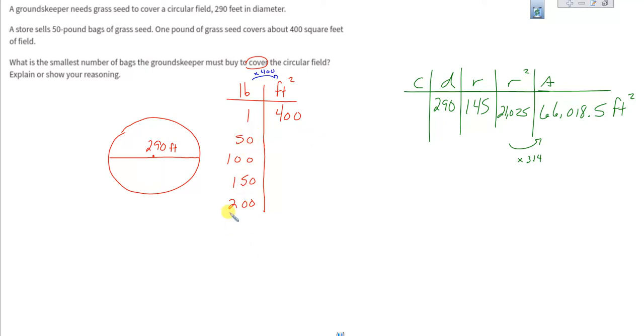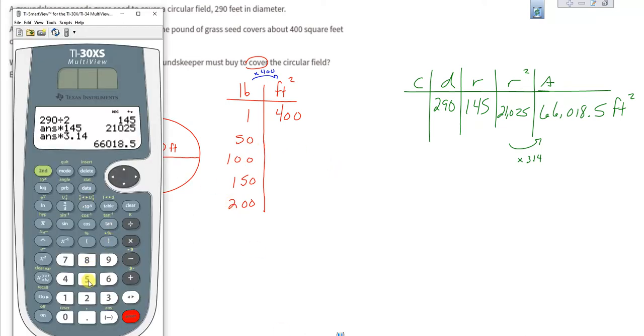We need to multiply these numbers by 400 to get across to the other side. So a 50 pound bag would cover 400 per pound, and that would be 20,000.